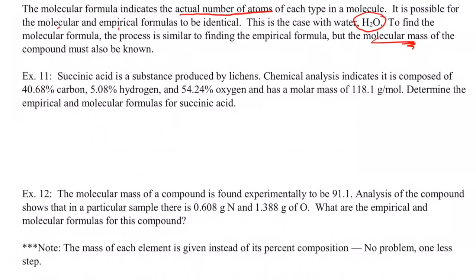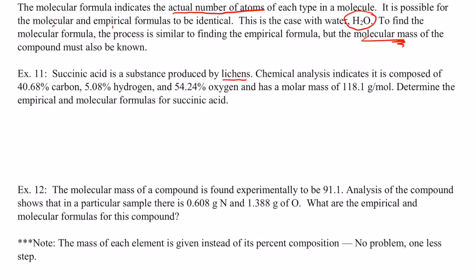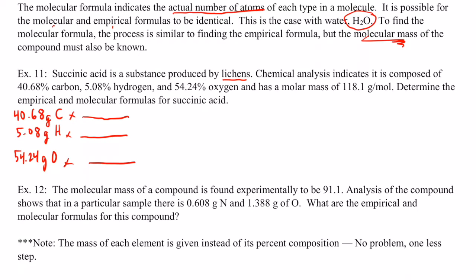So let's dive into Example 11. We have succinic acid, a substance produced by lichens — you'll learn about those in biology. Chemical analysis indicates it is composed of 40.68 percent carbon, so out of 100 grams that would be 40.68 grams of carbon, 5.08 percent hydrogen, and the rest — 54.24 percent — is oxygen. We start the same way: finding the lowest whole number mole ratio, so we multiply each by a conversion line. Carbon's atomic mass is 12.01, hydrogen's is 1.01, and oxygen is 16.00.